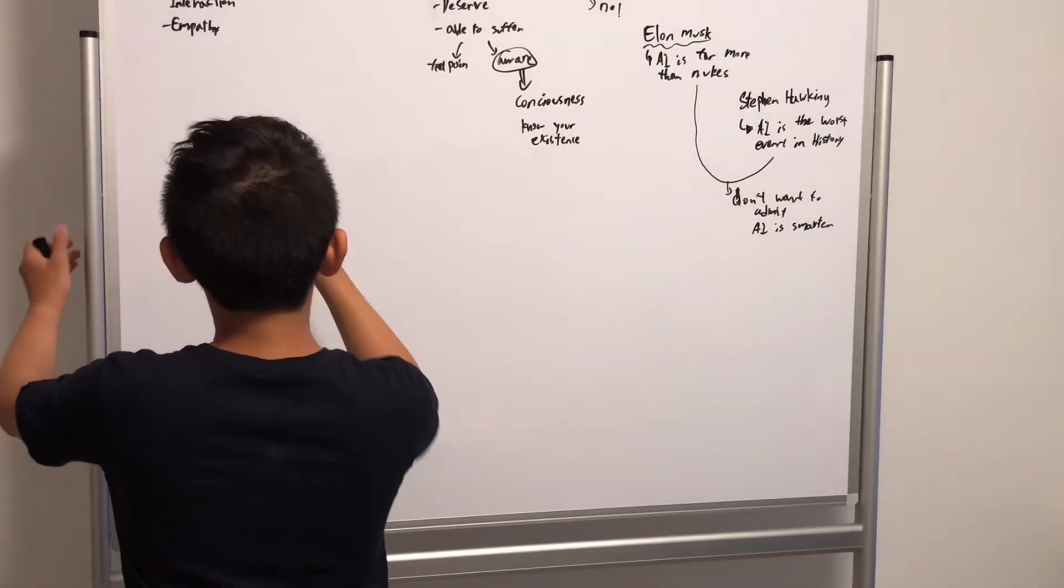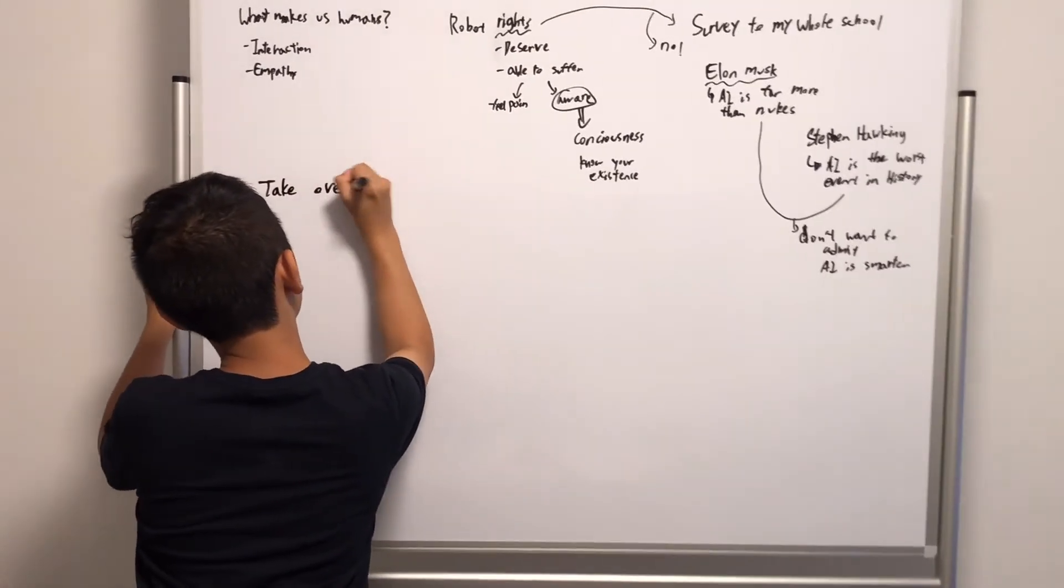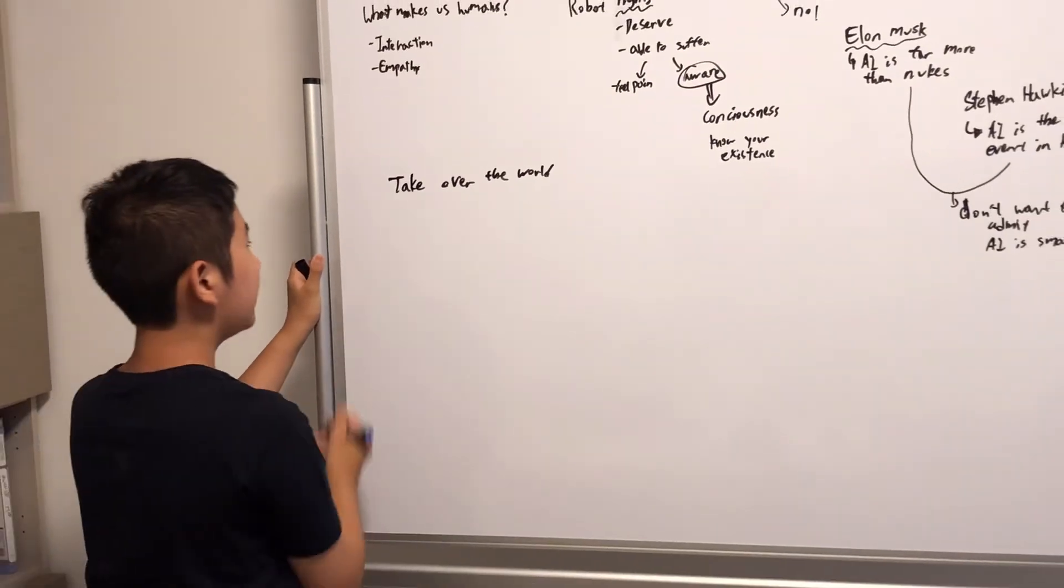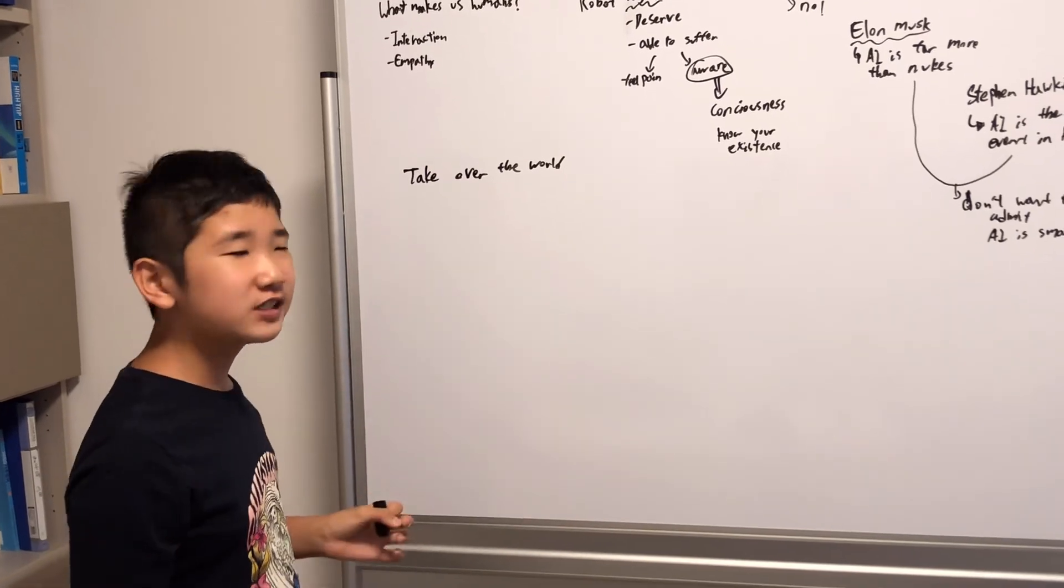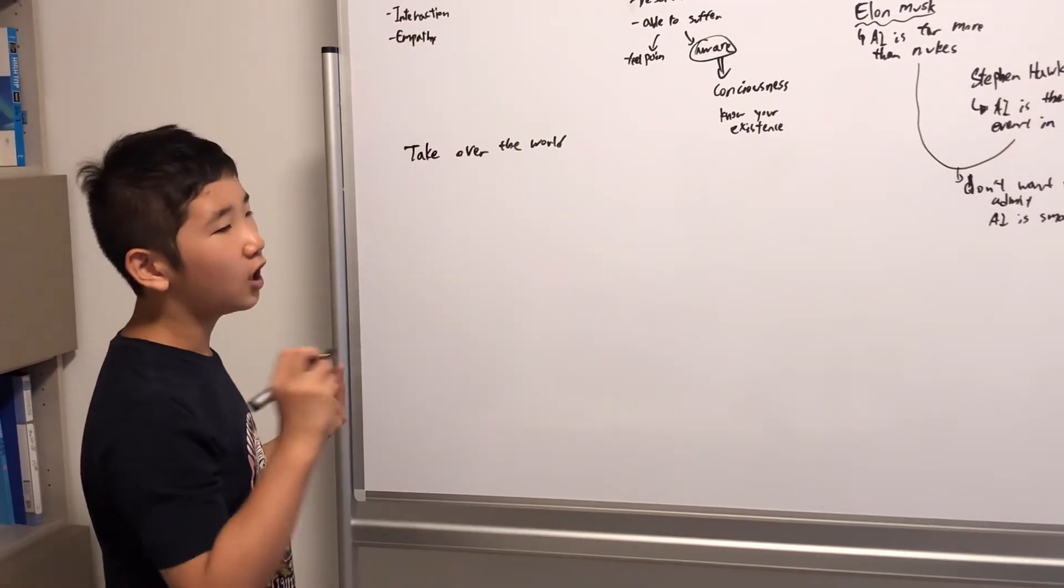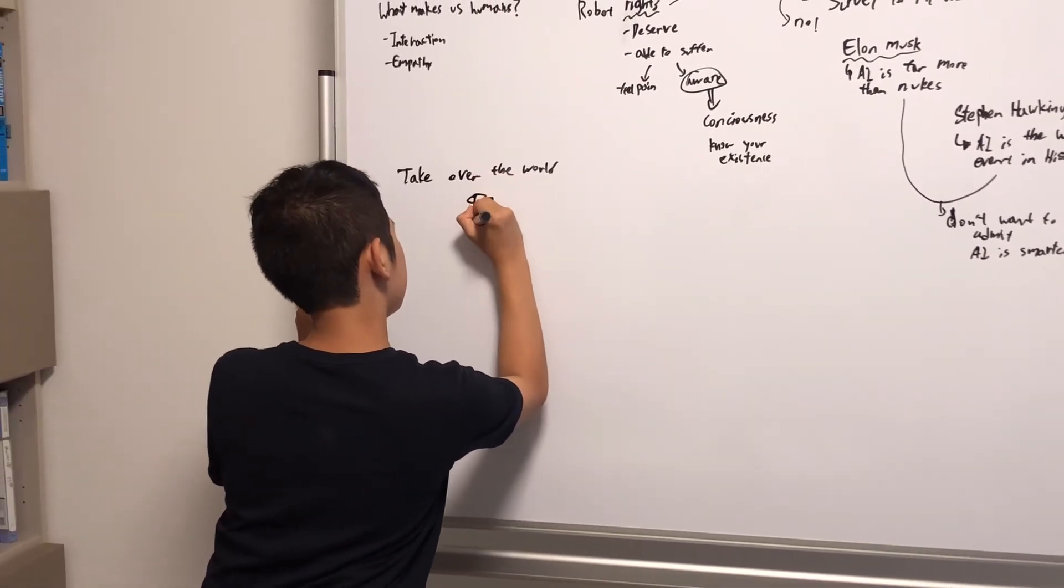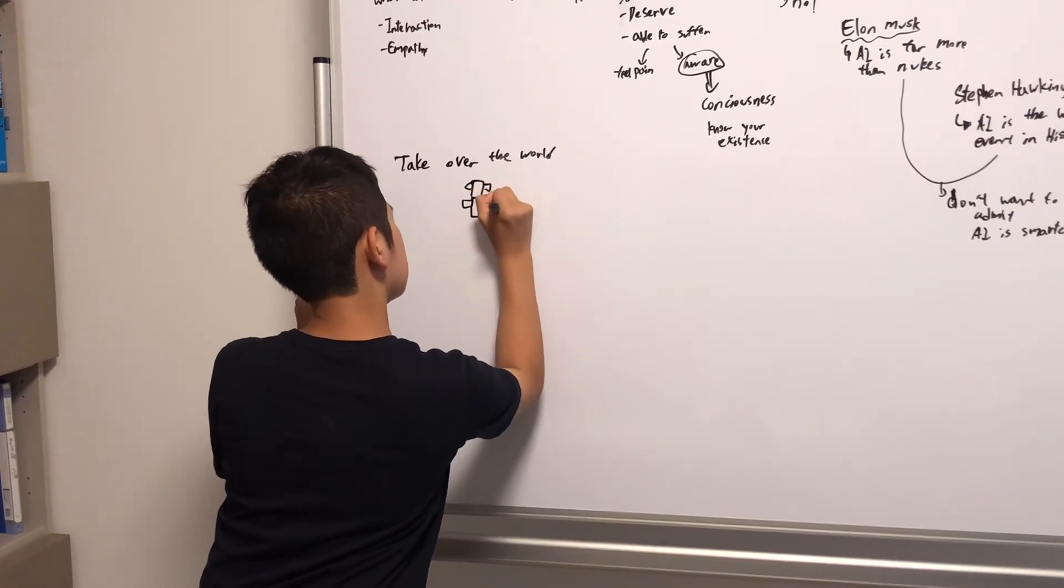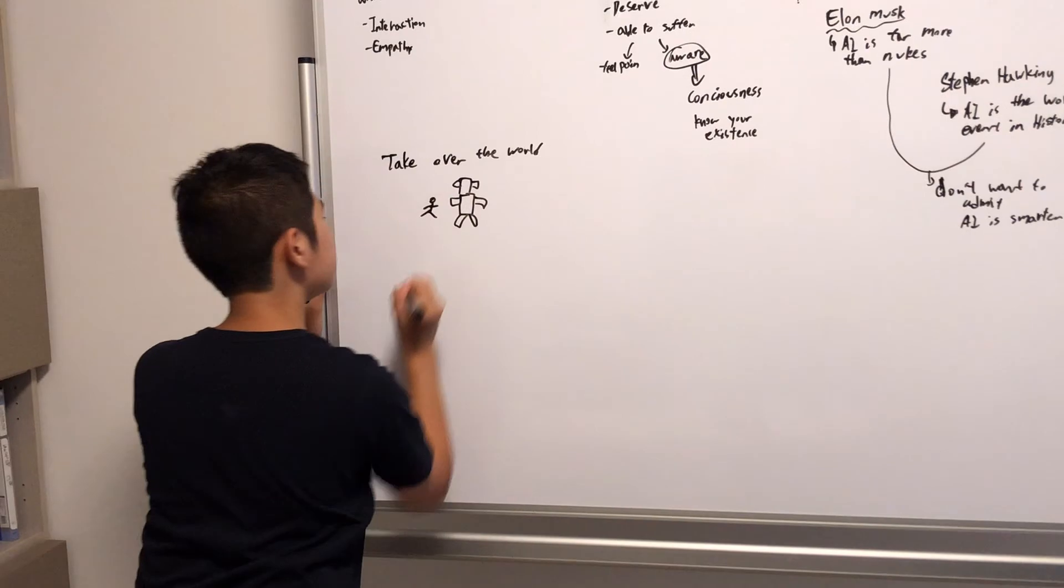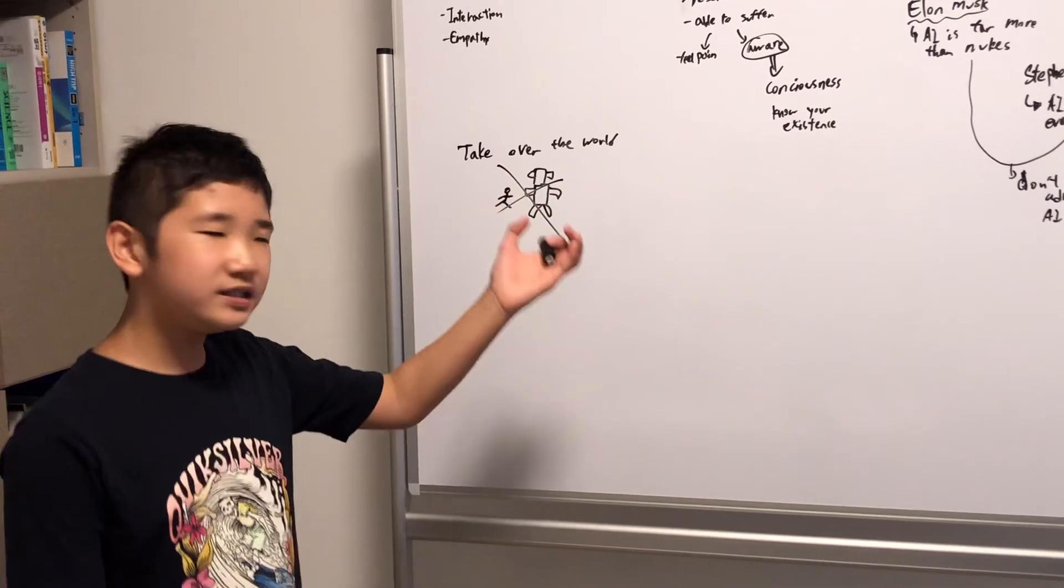I want to define take over the world, or what that means. I'm not sure Stephen Hawking and Elon Musk, I'm sure. I'm sure Elon Musk and Stephen Hawking didn't mean robots walking around in the street. Let me draw a picture. So let's say this is a robot. This is a robot, and this is a human. You're walking around the street and you meet a robot. It's not this. They don't mean this.